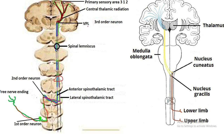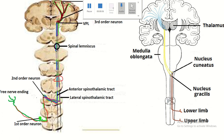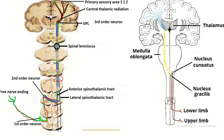Both axons of the lateral and anterior spinothalamic tracts synapse with the nerve cell body present in the ventral posterior lateral nucleus of the thalamus. Then the axon of the ventral posterior lateral nucleus ultimately reaches the primary sensory area. For the tract of gracilis and cuneatus: the first order neuron's central process synapses with nucleus gracilis and cuneatus, then crosses to the opposite side — this portion is known as the medial lemniscus. It synapses with the ventral posterior lateral nucleus of the thalamus and ultimately reaches the primary sensory area, area number 3, 1, 2.